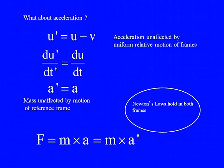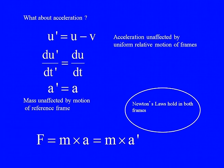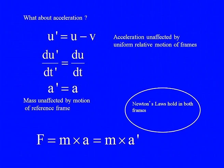What about the acceleration? Starting from U prime equals U minus V, if you differentiate once again, you get DU prime by DT prime equals DU by DT times DT by DT prime. Since DT by DT prime equals 1, the acceleration is the same in both frames. So acceleration is unaffected when you have frames moving with uniform relative velocities.